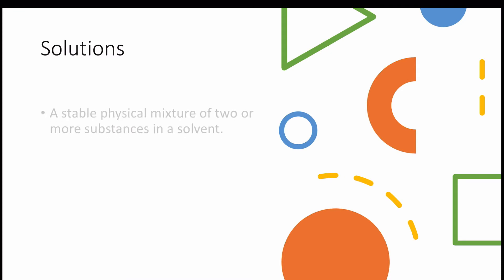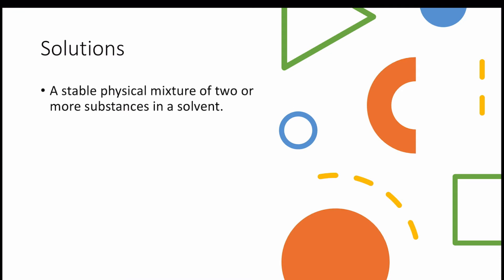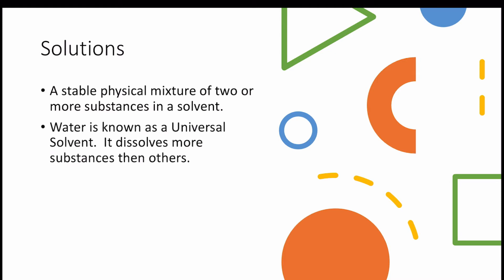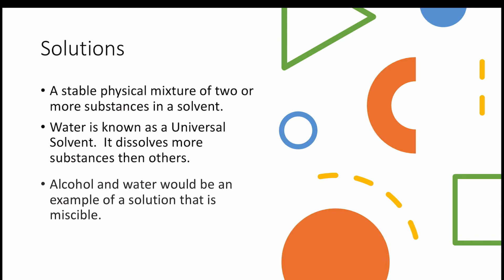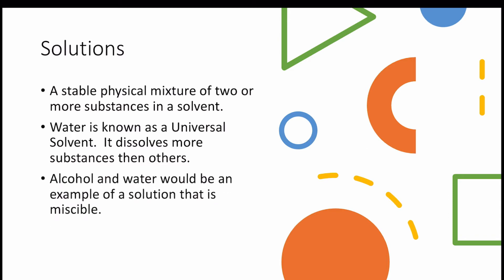Solutions — a stable physical mixture of two or more substances in a solvent. Water is known as the universal solvent because it dissolves more substances than any others that we use. Alcohol and water would be an example of a solution that is miscible.